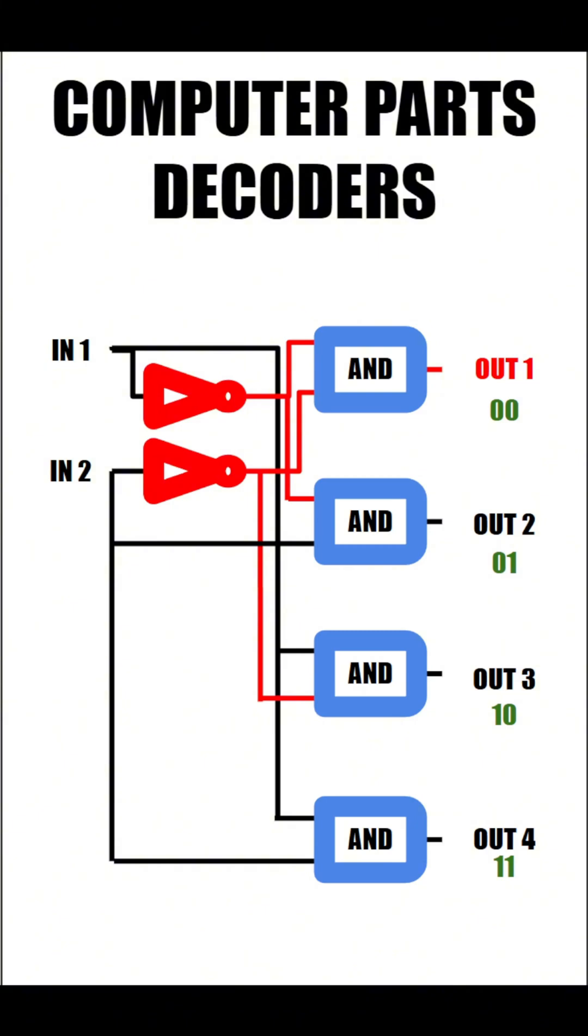So if we wanted to turn on output 3, what would we have to do? Well, because its input address is 1,0, all we have to do is turn on input 1 and turn off input 2. And when we do that, sure enough, output 3 turns on.